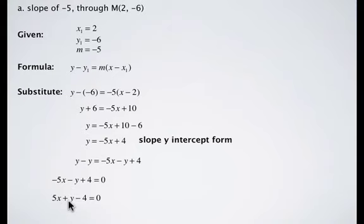So the answer is 5x plus y minus 4 equals 0. That's in standard form, which is ax plus by plus c equals 0, where a has to be a positive integer.